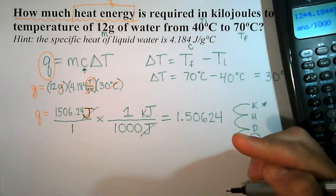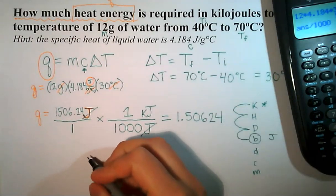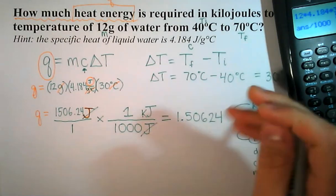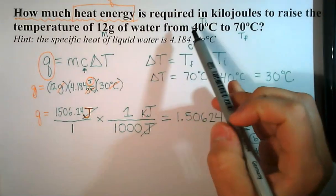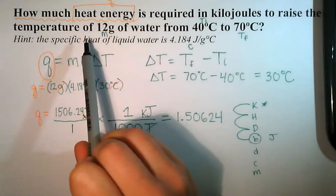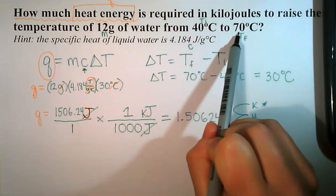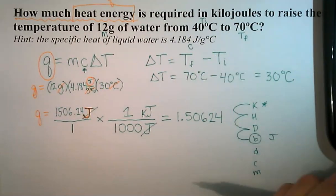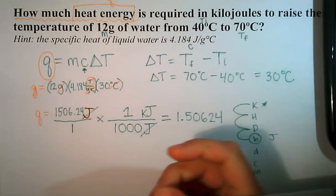But I'm not going to hold on to all those decimal places, I am going to round my final answer. Let's take a look at significant figures. Our problem actually only has one sig fig, two sig figs. So if we were rounding to correct sig figs, then we would round to two kilojoules.